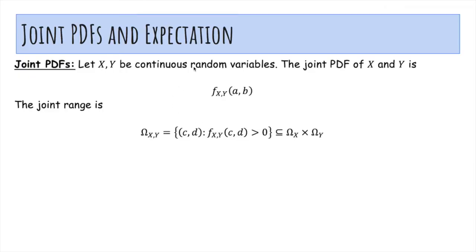If x and y are continuous random variables, the joint PDF is denoted f sub x,y of a,b. The joint range is the set of points (c,d) where the density at these two points is strictly positive. Note that if you do a double integral over all values of the joint density, you will get one.